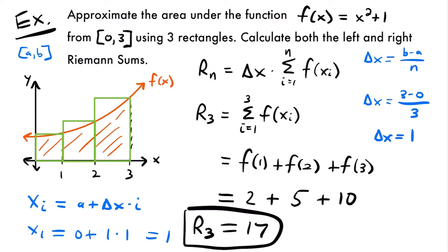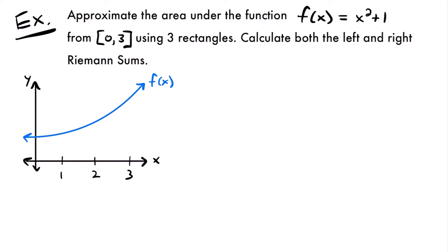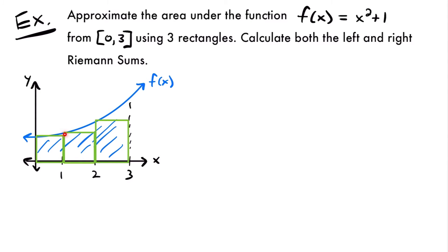Now let's find the area using a left Riemann sum. We have the same problem, approximating the area from 0 to 3, but now using left endpoints. When I draw the rectangles using left endpoints, the upper left-hand corner of each rectangle meets the function. Notice that the area will be an underestimation, because we're missing some area underneath the function that the rectangles don't cover.